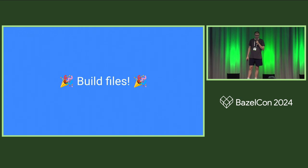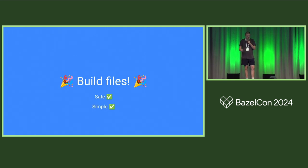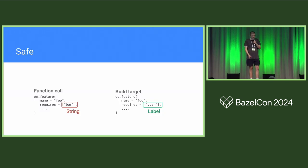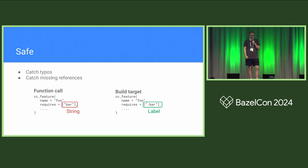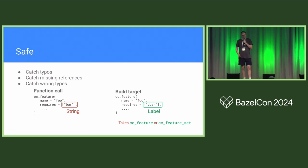Build files are safe — if you write a build file, you have trust that it works without ever actually writing a test for the build file itself. Build files are simple — you're all very familiar with how to write build files. And build files are modular — they're literally made of modules. The difference is: with the old version we would use a string, and with the new version we would use a label. Because of that, if there's a typo, it gives us an error. If there's a missing reference or a feature that doesn't exist, it gives us an error. If we pass in a label of the wrong type, it will give us an error — this will only take a feature or a feature set.